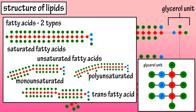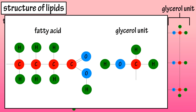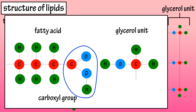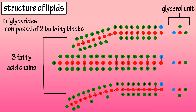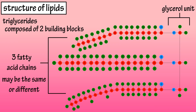We will cover fatty acid molecules in depth in a separate video. In the formation of a triglyceride, the fatty acids bond with the glycerol molecule. The three fatty acids attach their carboxyl groups — which are the carbon, oxygen, oxygen, hydrogen group — at the end of the molecule, to the hydroxyl OH groups of the glycerol molecule. As this process takes place, three molecules of water are removed, which is a dehydration synthesis reaction. Some triglycerides contain three molecules of the same type of fatty acid, and others may have three different types of fatty acids.